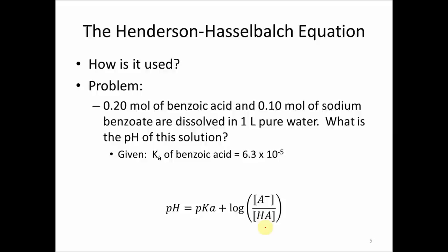So how is it used? I give an example problem here that 0.20 moles of benzoic acid and 0.10 moles of its conjugate base, sodium benzoate, are dissolved in 1 liter of pure water. What is the pH of this buffer solution? Given is the Ka of benzoic acid, which is 6.3 times 10 to the minus 5. This is normally found in your textbook or some other reference source.